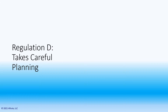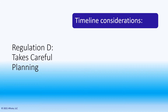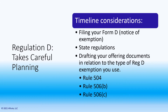Now that you know you have exemptions from registration, you still need to carefully plan your Regulation D offering. There are some timeline considerations such as what forms need to be filed with the SEC to claim the exemption, the state filing requirements in relation to the sale of the securities, and which exemption under Regulation D will I formulate my offering.